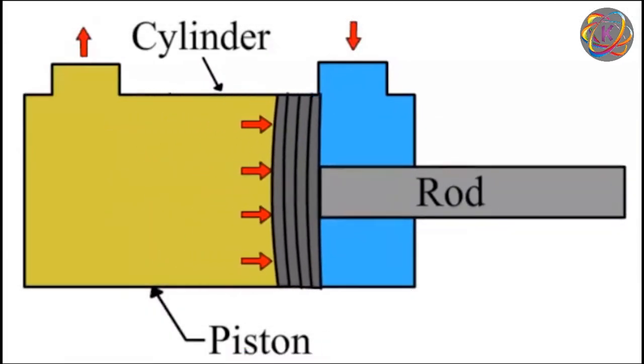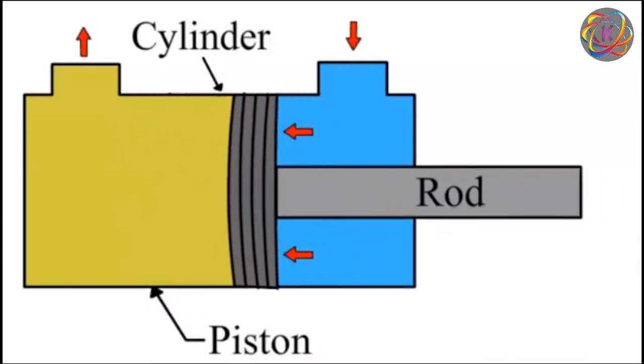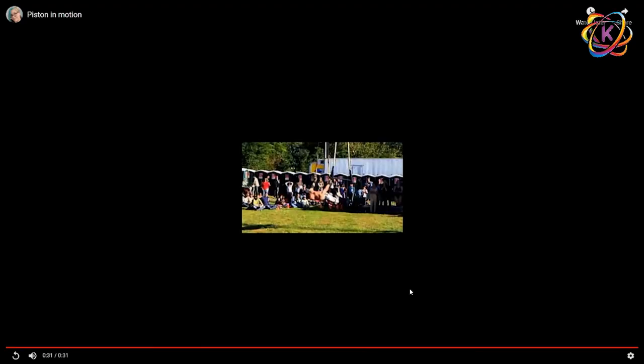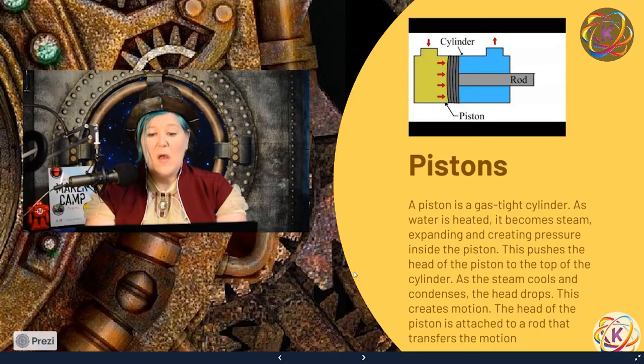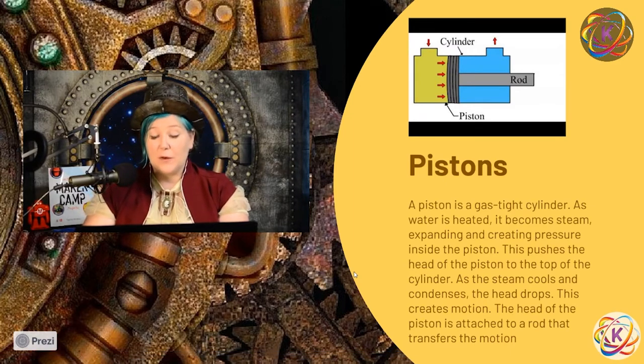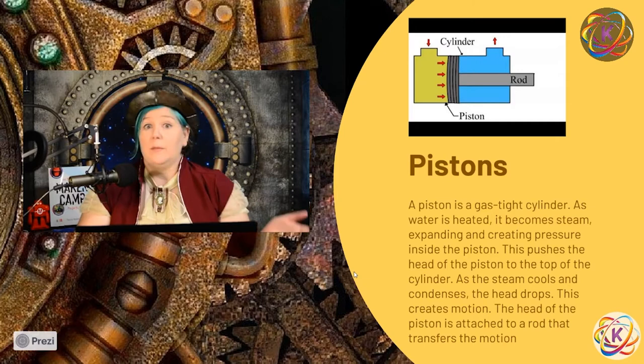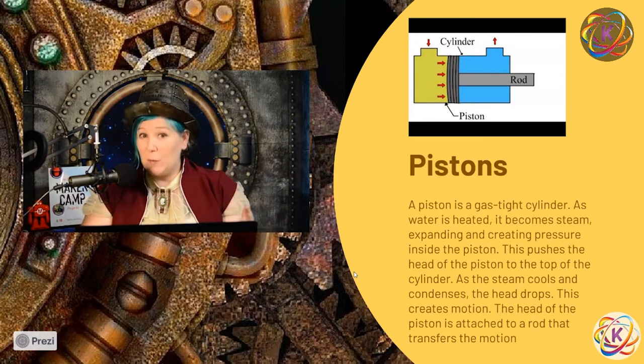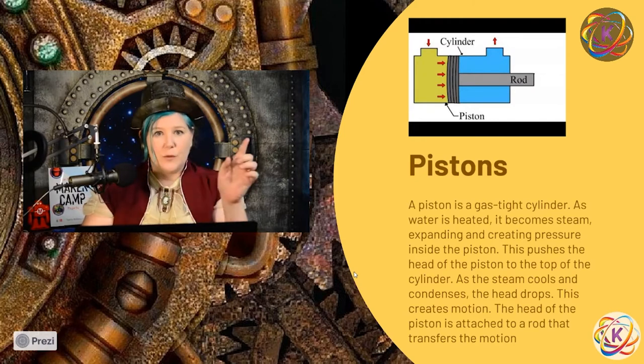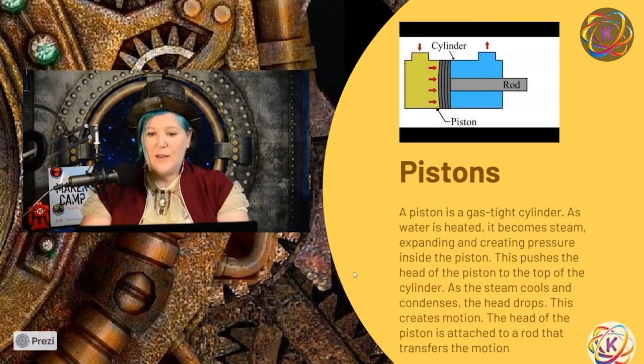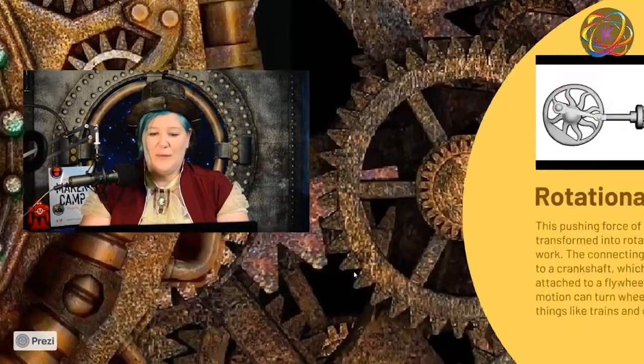You can replicate this, by the way, by using a couple of plastic syringes, which you can get. So that's basically how piston works. Now, up and down motion can be certainly very useful. But to make something like a train work, you need to take that back and forth motion or up and down motion and make it into a turning motion. And that's where the next part comes in.